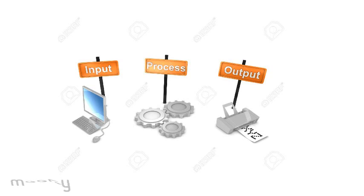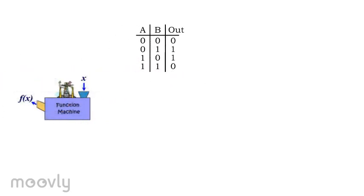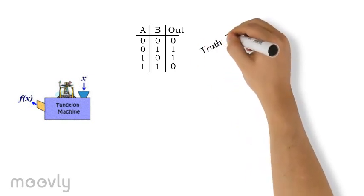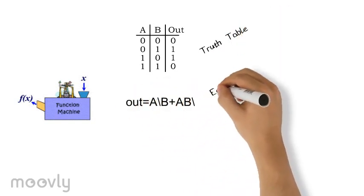Any function or problem can be implemented by a table. This table contains input and output and shows the relation between them. We call this a truth table. Another way of implementation is through equations.